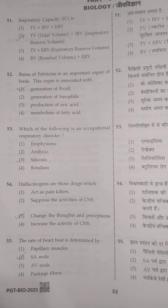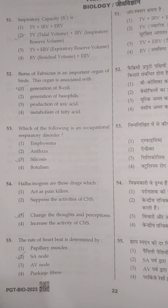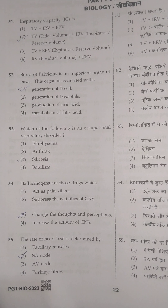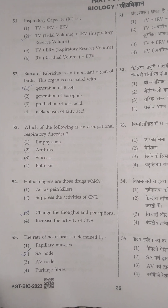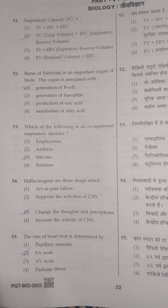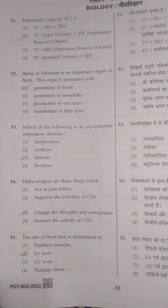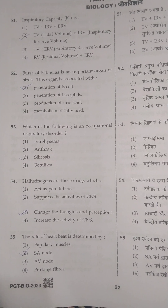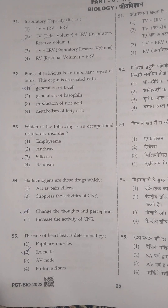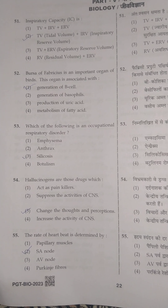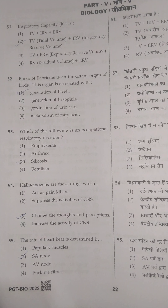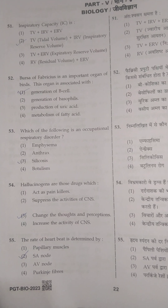Inspiratory capacity — its correct answer is option 2: tidal volume plus inspiratory reserve volume. The next question is about bursa of fabricius, which is an important organ of birds. This organ is associated with its correct answer, option 1: generation of B cells.